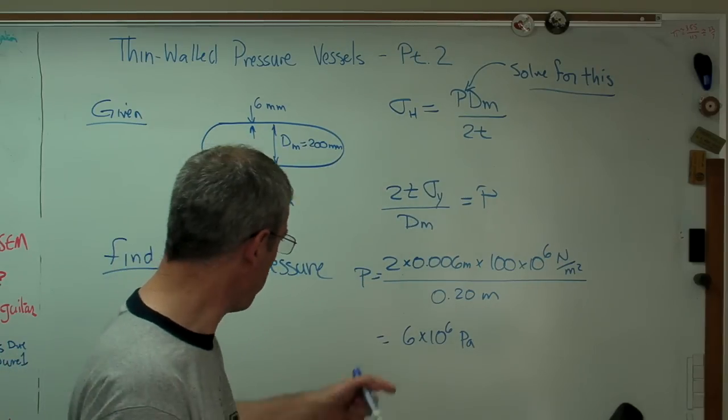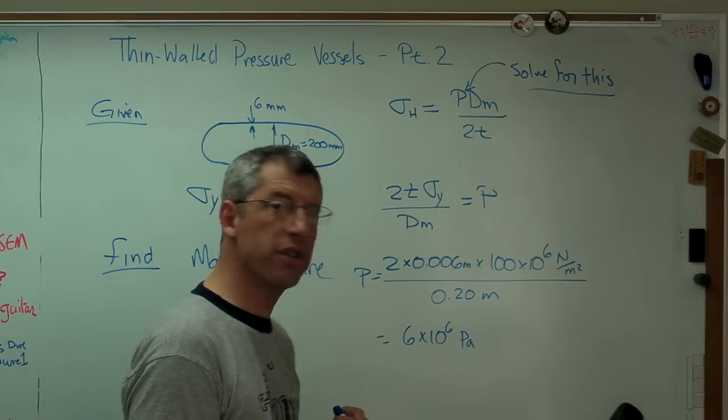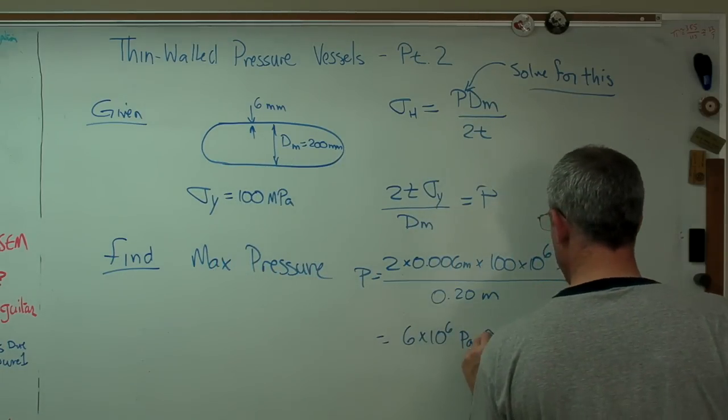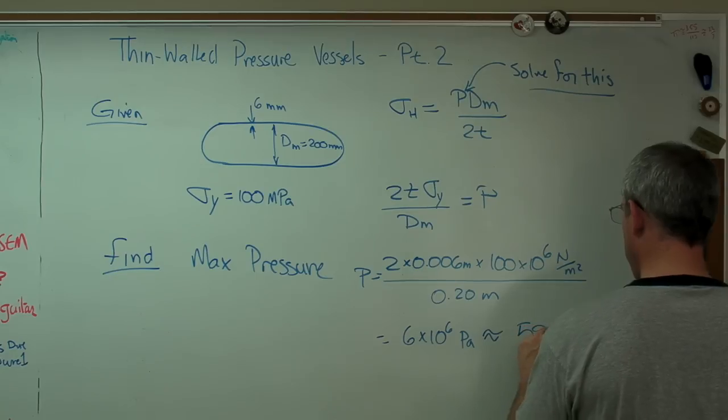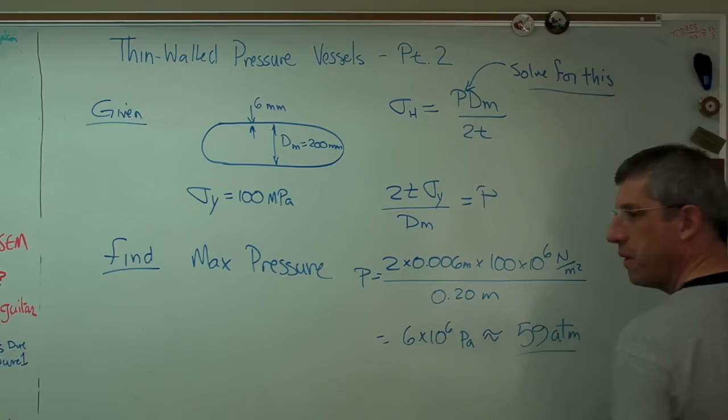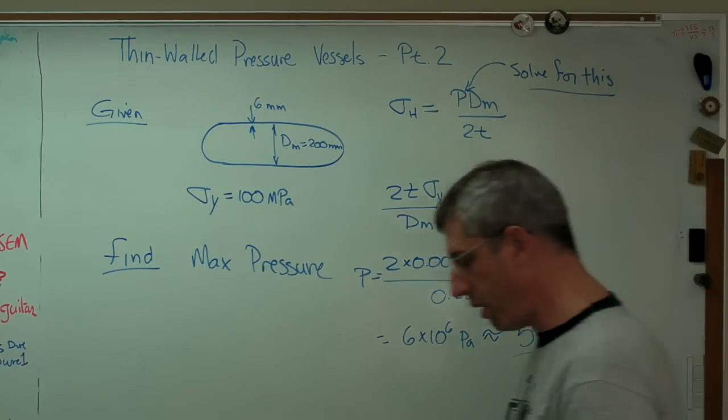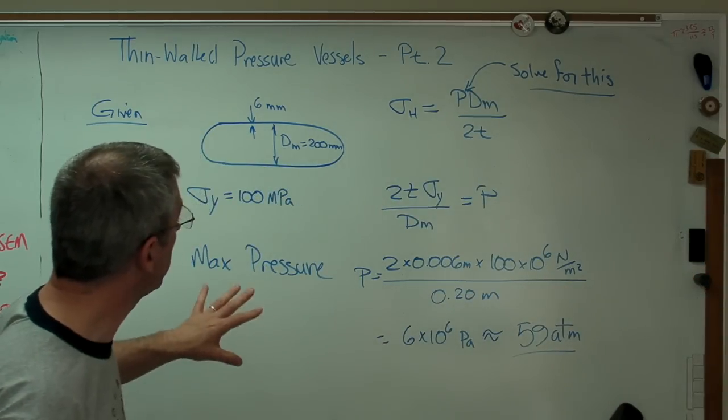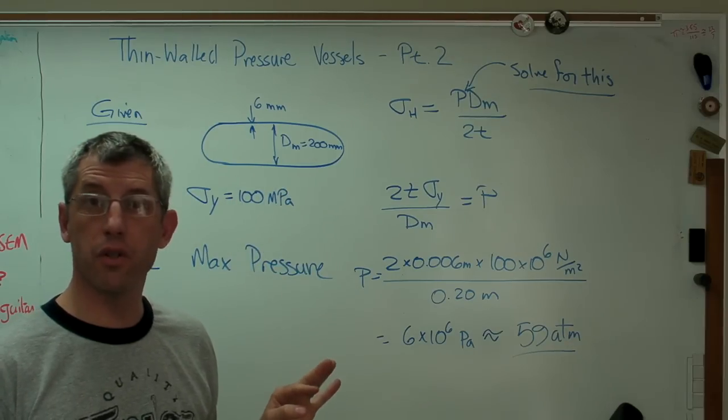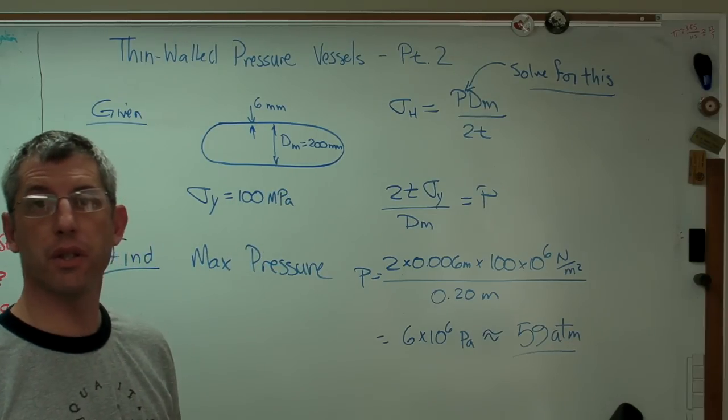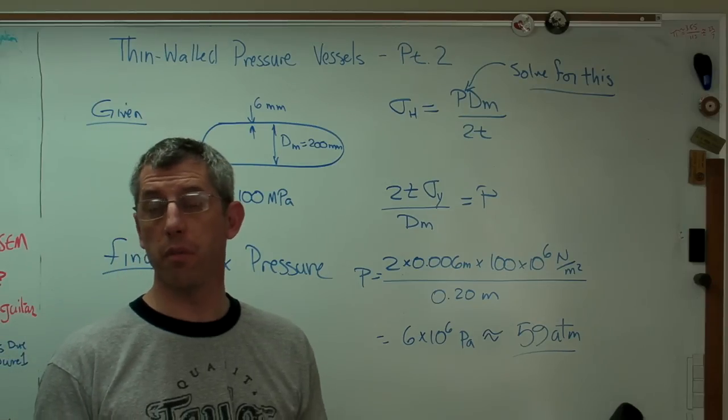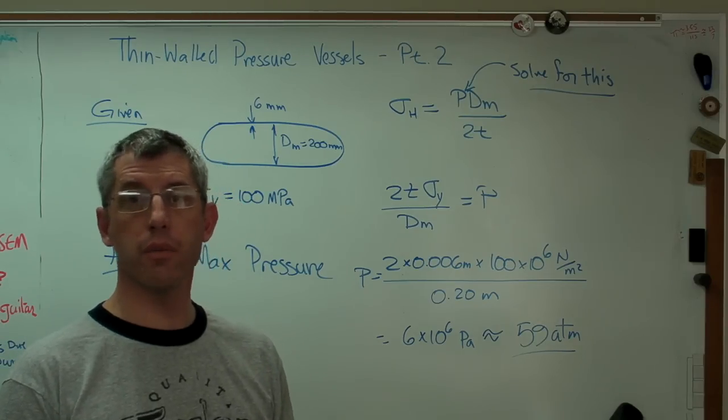I'm not sure what that means. That isn't a very helpful unit. That turns out to be about 59 atmospheres in round numbers. 59 atmospheres. Now remember, all the calculations we've done here have assumed we have a thin wall pressure vessel. The good rule of thumb is we want the mean diameter to be 20 times the wall thickness.